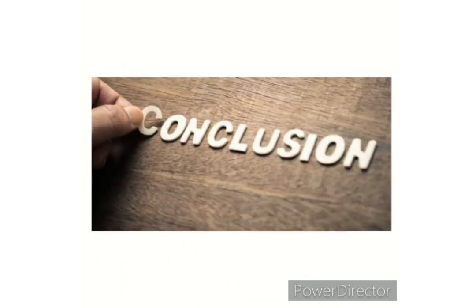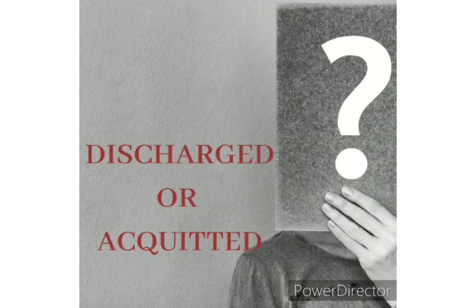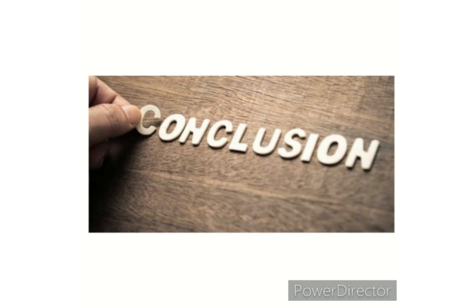The next question is: what is a conclusion? A conclusion is where you pass your verdict by either discharging or acquitting A of the offense, or stating whether A is guilty of the offense of rape or not. The conclusion has a connection to the issue — the issue is a question, and the conclusion is the answer to the question. The issue is whether A is guilty of rape or not. Then the conclusion is saying that, upon considering the given facts and what the law says, A is indeed guilty of the offense of rape.